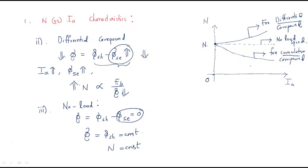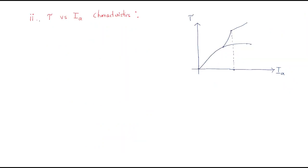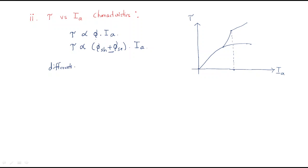Next are the torque vs. armature current characteristics. Generally for any DC machine, torque is proportional to flux times armature current. For a compound motor, the flux is a combination of shunt flux and series flux. In the case of differential compound, the total flux decreases, so the torque also decreases after a certain point.